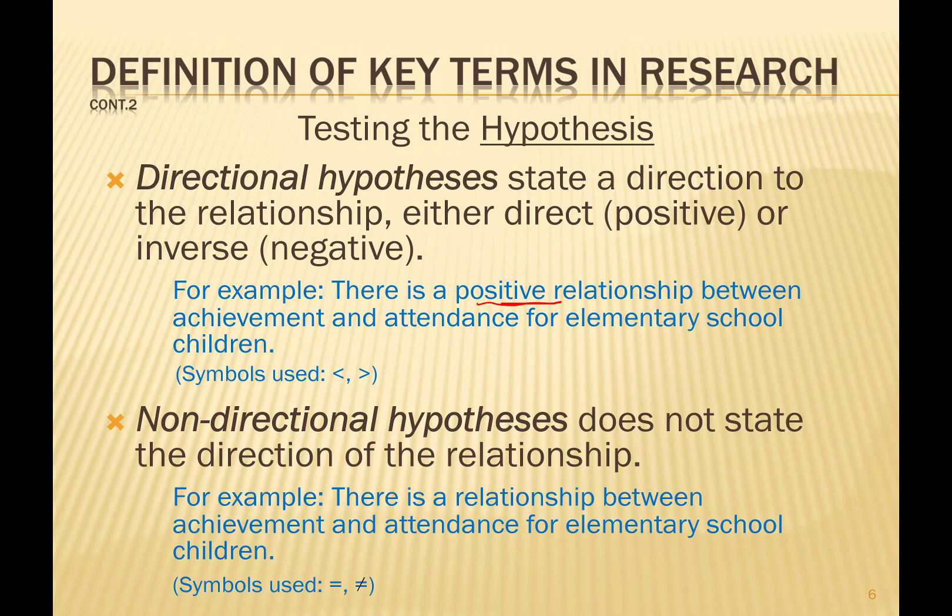There's another type of hypothesis called non-directional, and this suggests that there is no direction to your hypothesis. Using the same example, a non-directional hypothesis would say that there is a relationship between achievement and attendance for elementary school children. Notice that there is no positive or negative suggested in the statement. In setting up the hypothesis, we would use the equal or not-equal signs.